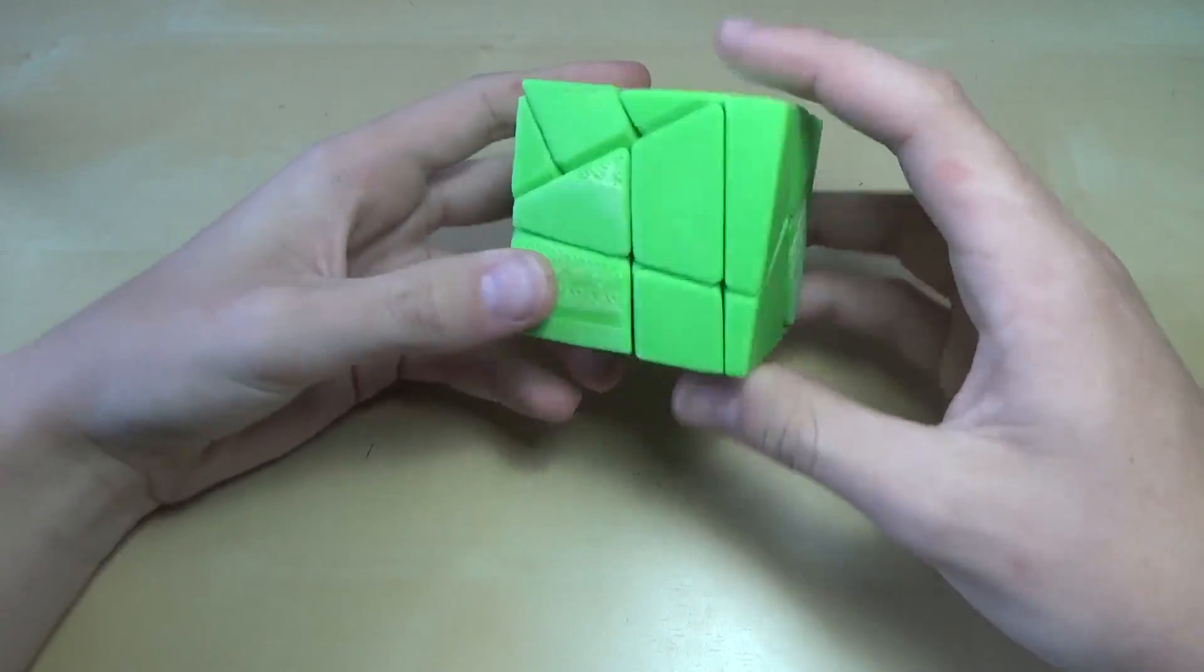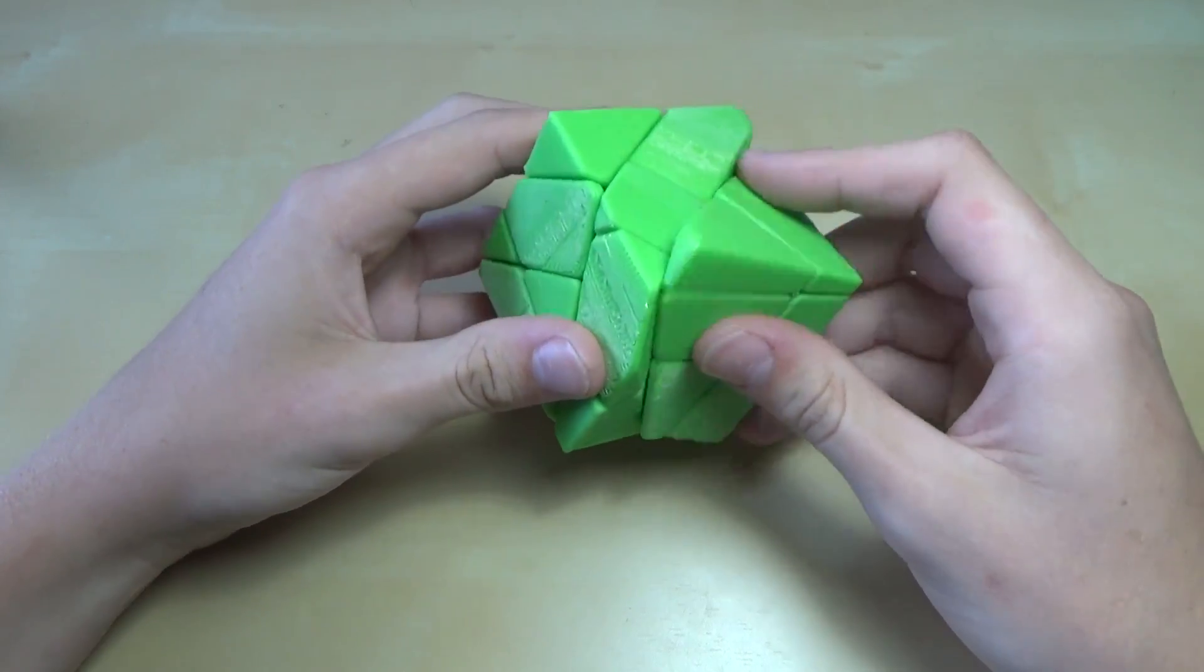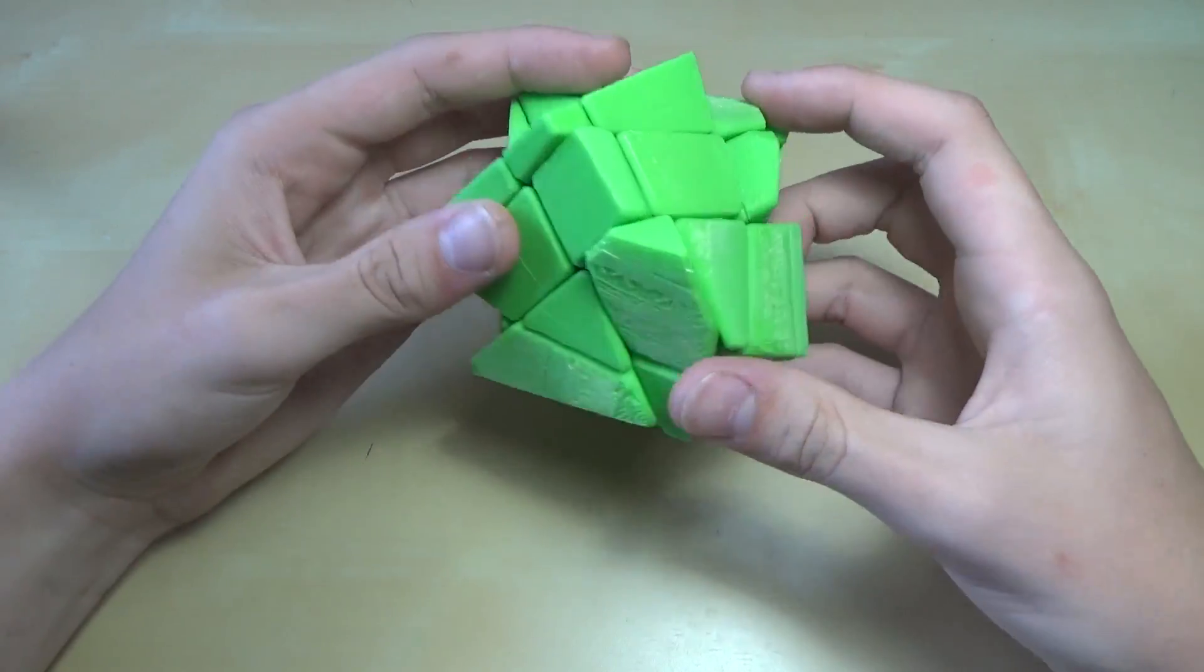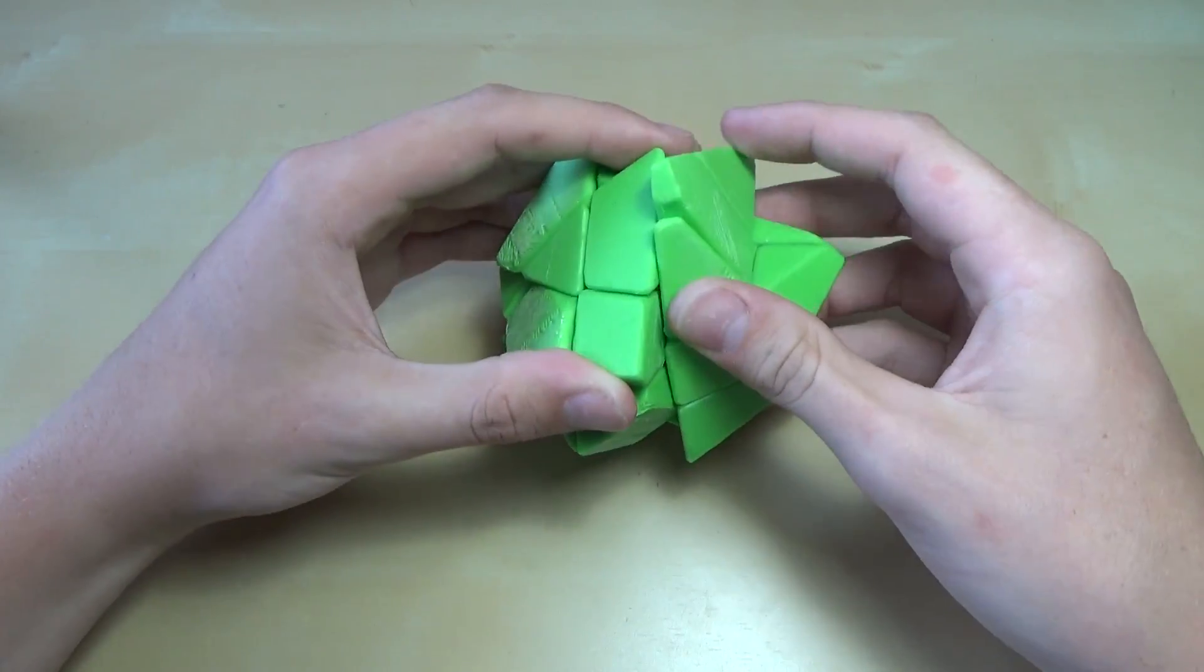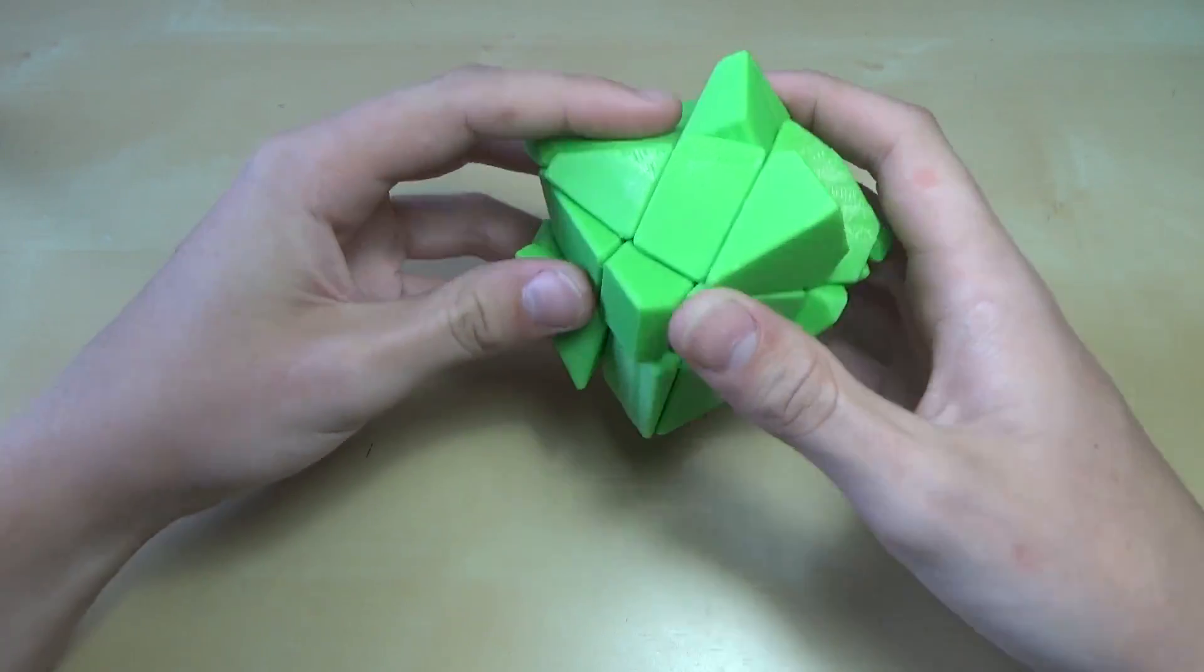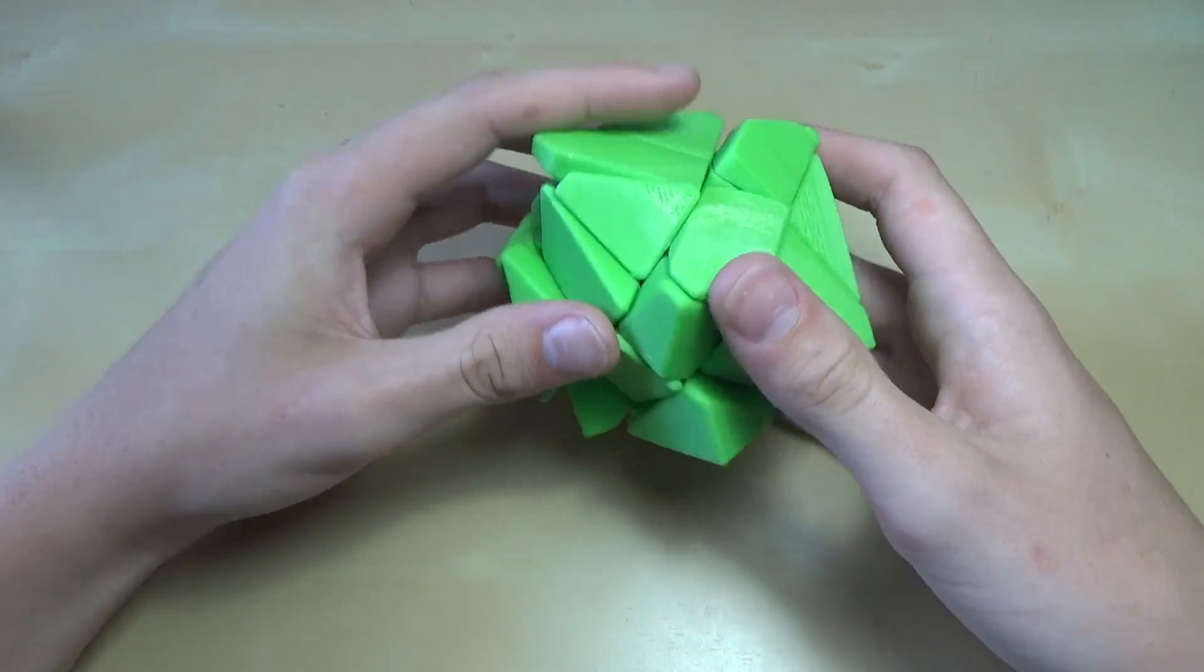We have the fully finished ghost cube here. I've actually tried to turn this a little bit, and it doesn't turn as bad as I thought it would. It actually turns decently well. It does lock up quite a bit, and it's hard to get the layers aligned and hard to get it to start turning, but if you turn the layer like this...